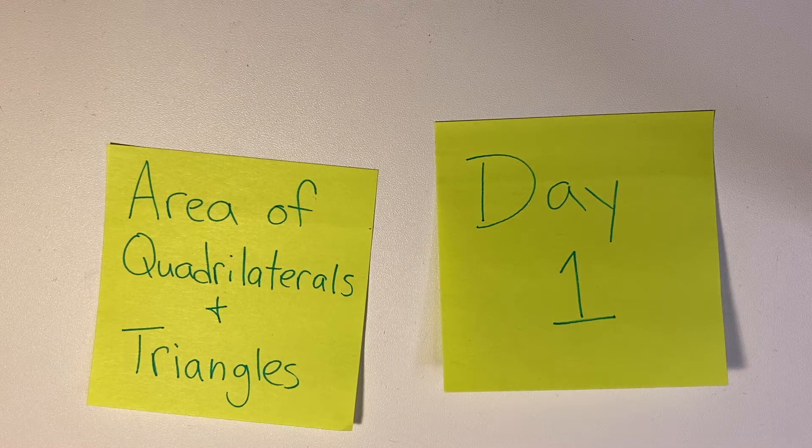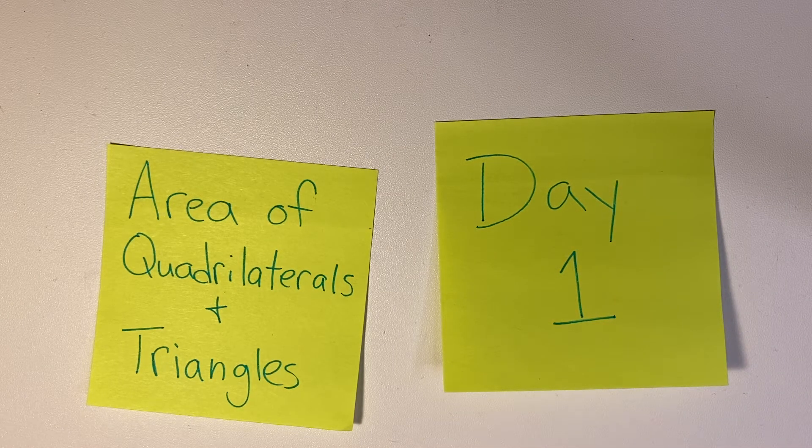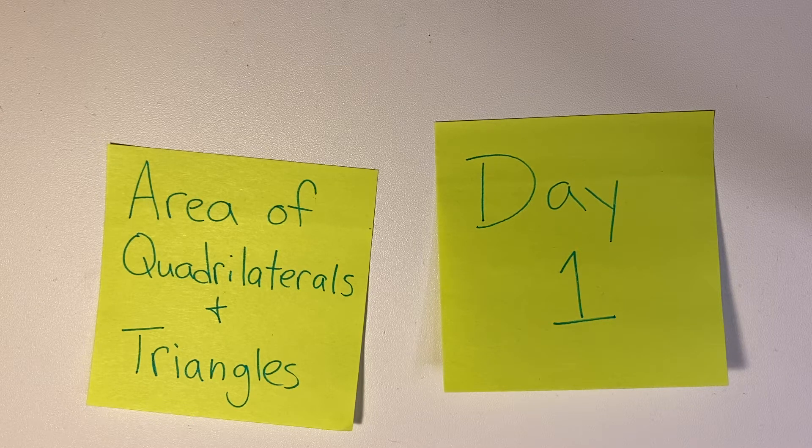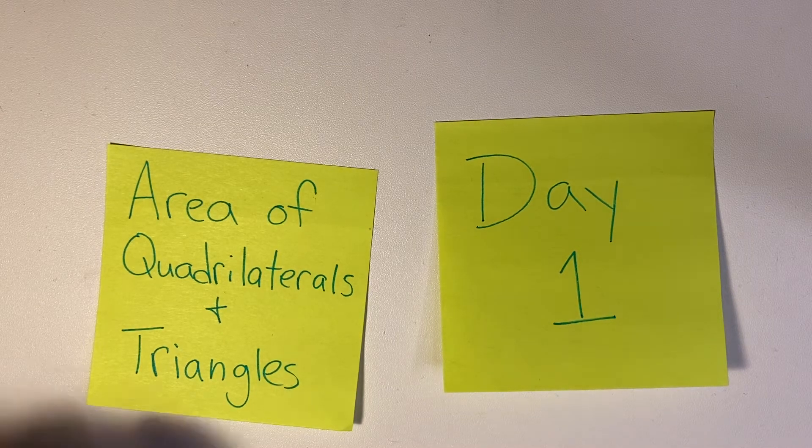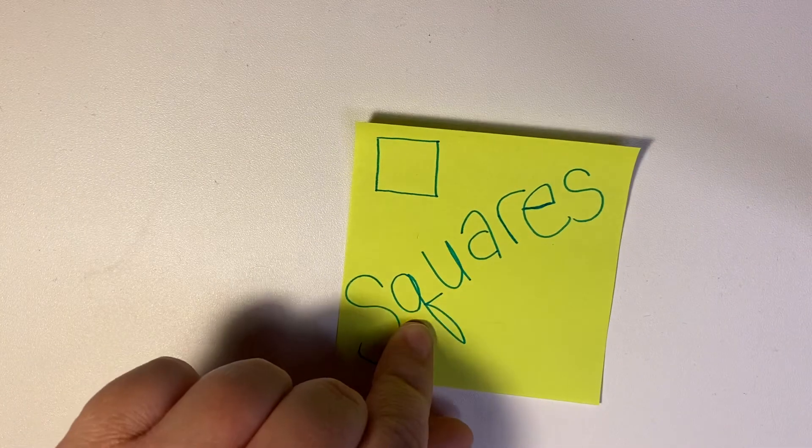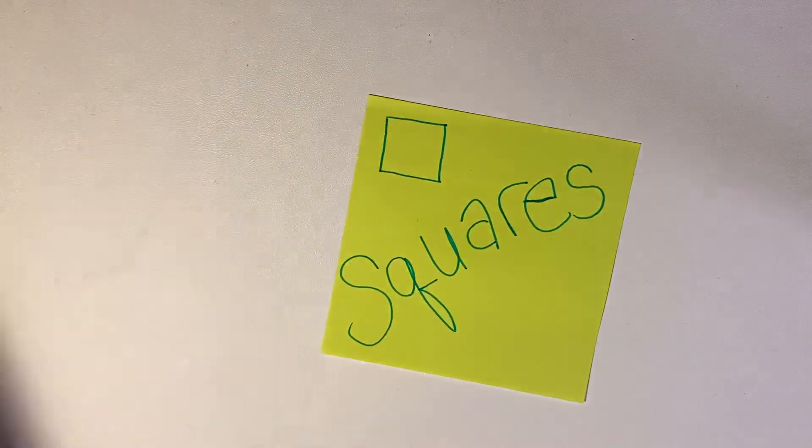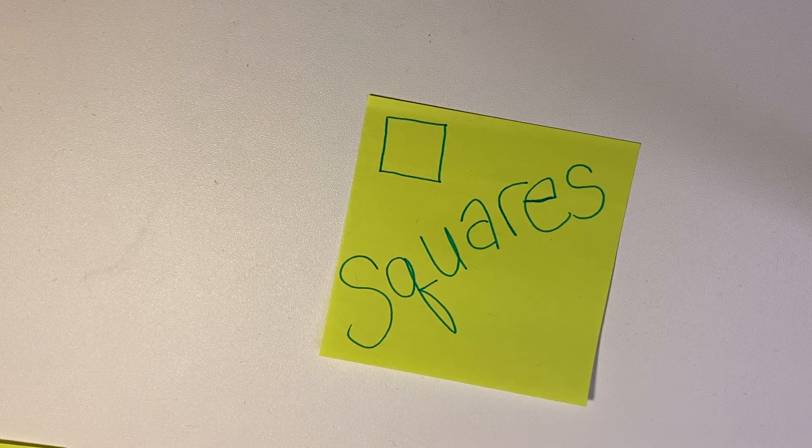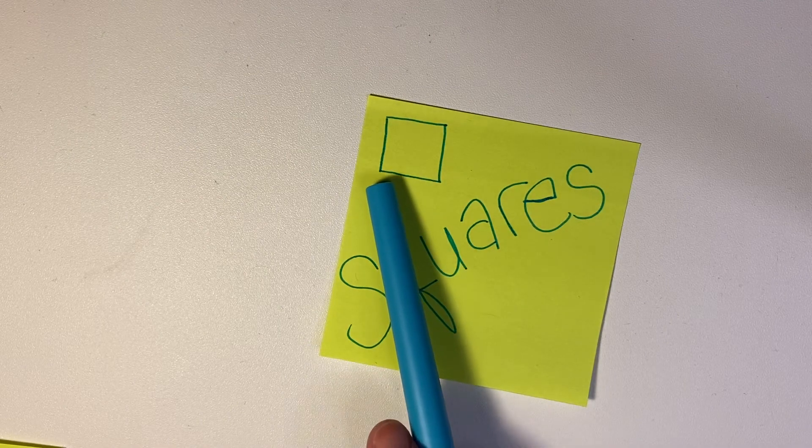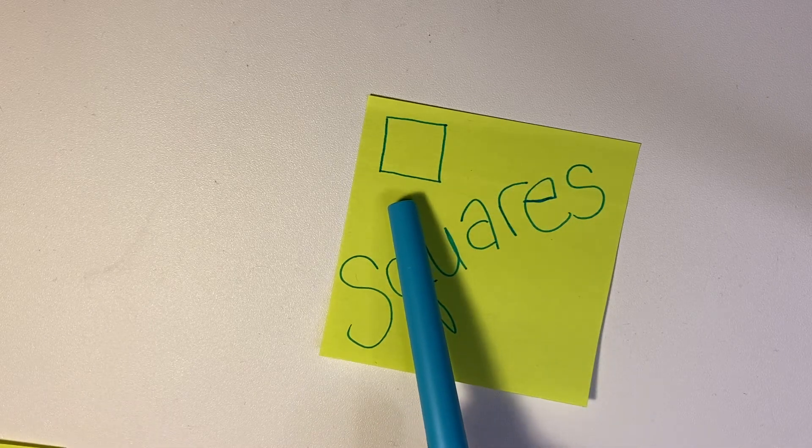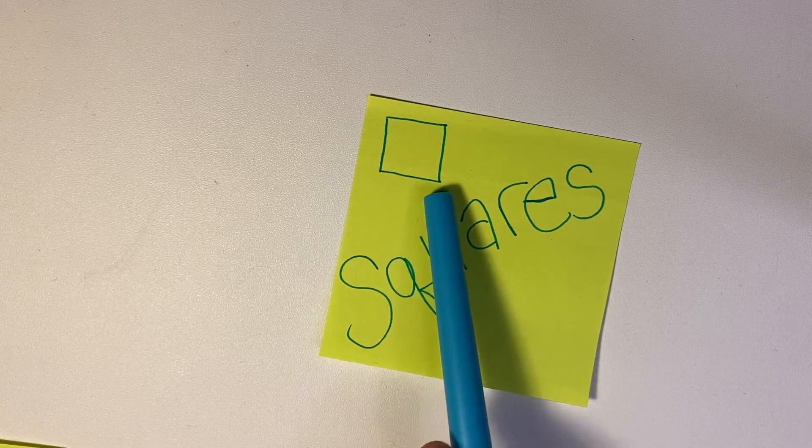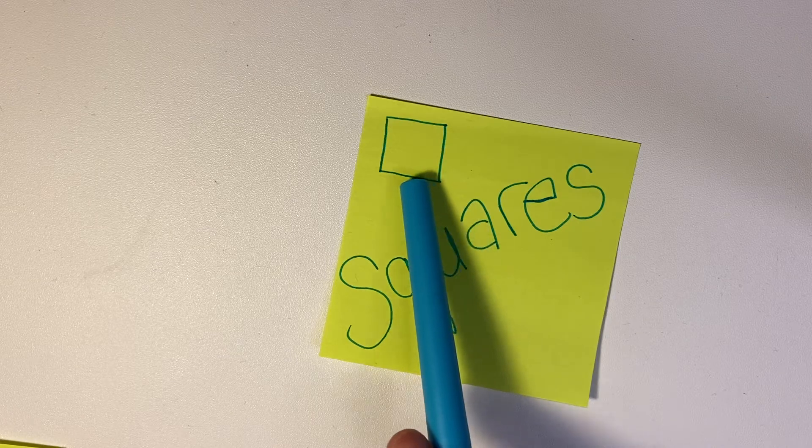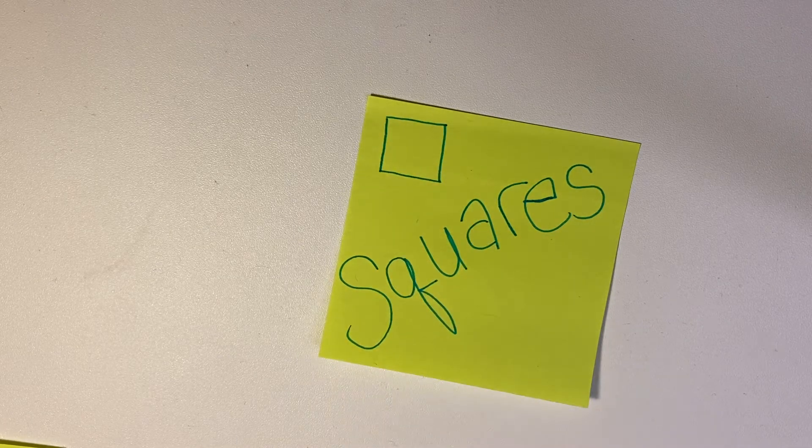Hi and welcome to Area of Quadrilaterals and Triangles, Day One. What we're going to talk about today is squares. So just so we all remember, a square is a polygon that has the same side length on all four sides.